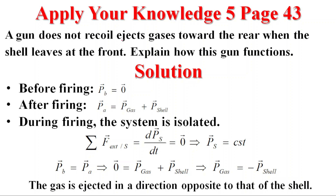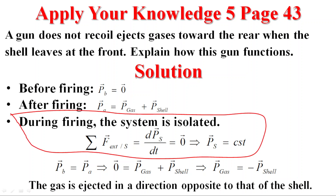Application: a gun does not recoil but ejects gases towards the rear when the shell leaves the front. Explain how the gun functions. Before firing, the linear momentum of the gun is zero — the gun is at rest. After firing, the linear momentum of the system is P_gas plus P_shell. During firing, the system is isolated, so sigma F equals dP/dt equals zero, meaning P of the system equals zero.